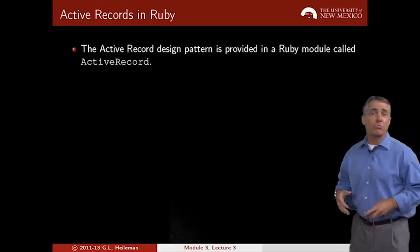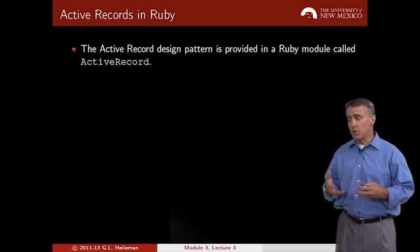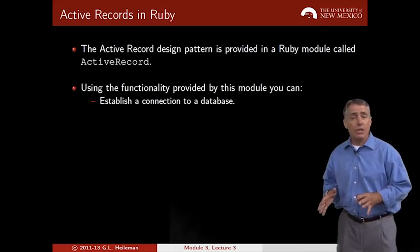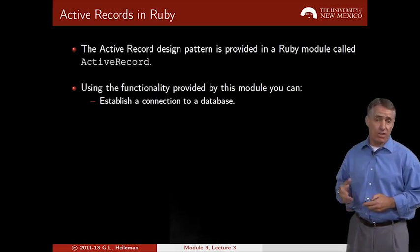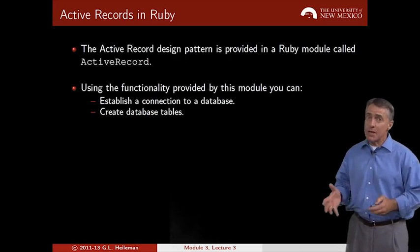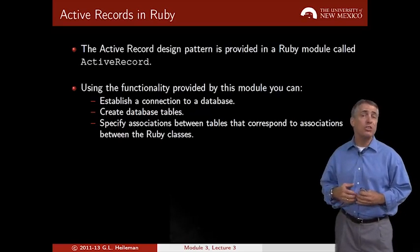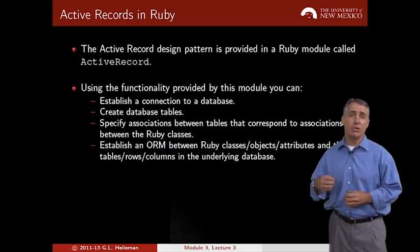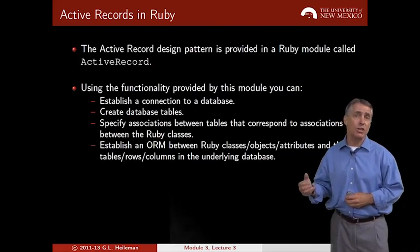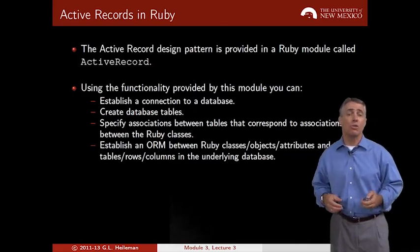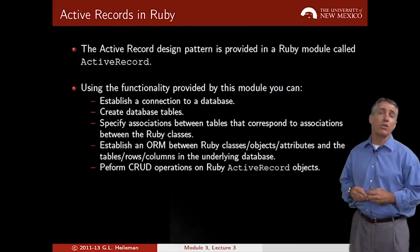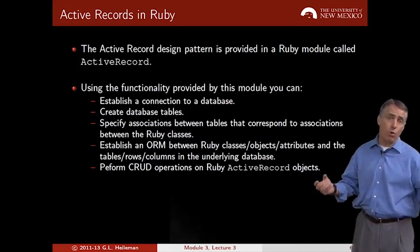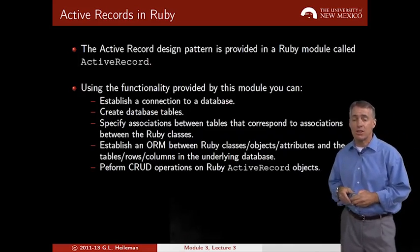The Active Record Design Pattern is provided in Ruby using a module called Active Record, and this is built into Rails as well. This module allows you to establish a database connection, create database tables, specify associations between various tables, and establish the object relational mapping between classes in your Ruby code and the underlying tables, rows, and columns. Finally, it allows you to perform CRUD operations over these objects and makes them work properly in the relational database.